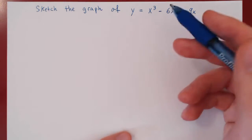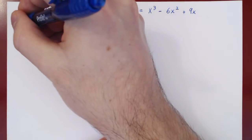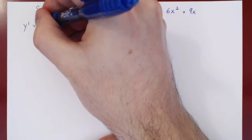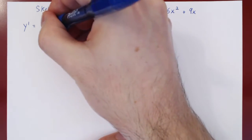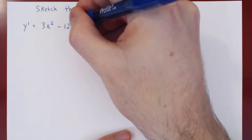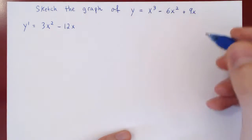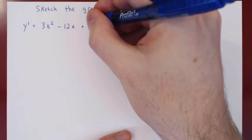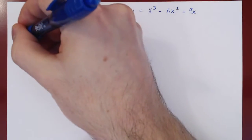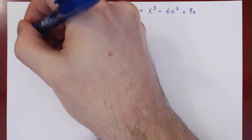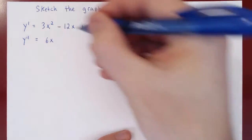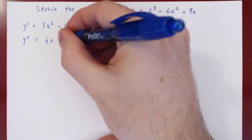So first, let's differentiate. Let's find the first derivative, y prime. This will be 3x squared minus 12x plus 9. Let us find the second derivative, y double prime, which will be 6x minus 12.